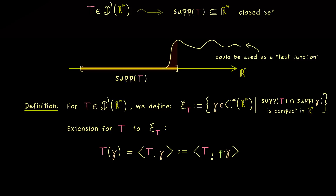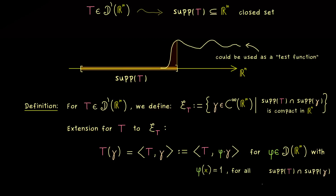We can solve this problem by making gamma into a test function by multiplying with another test function phi. The question is: how can we choose phi such that the left-hand side is well-defined? With the picture in mind, this is not so complicated. We don't want to change gamma inside the support of T, but we want to change it outside. This means on the compact intersection, the test function phi should be equal to 1. What happens outside of this set does not matter, because as a test function it will be 0 eventually. So this is always possible to choose.